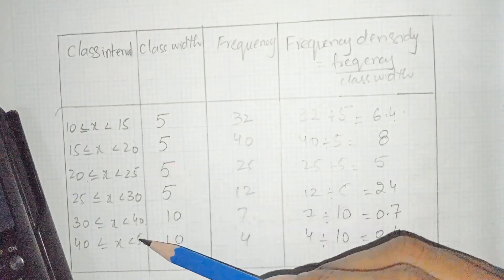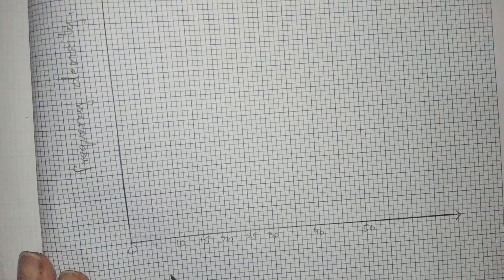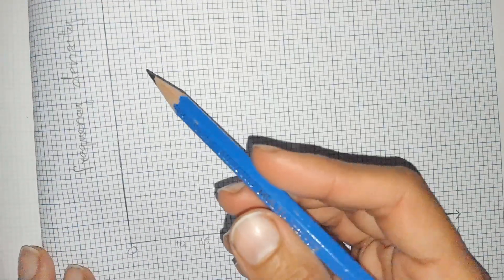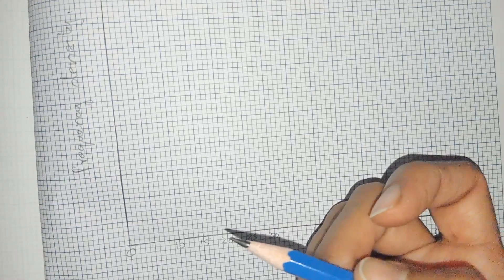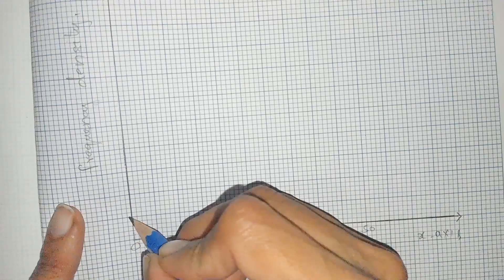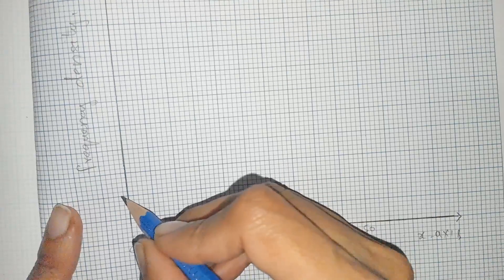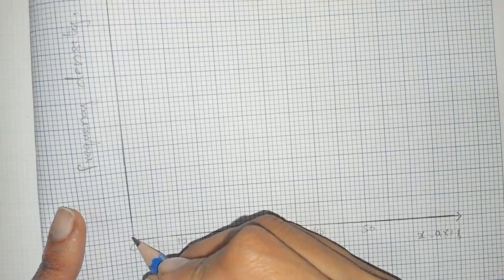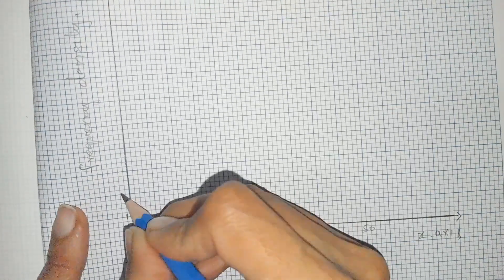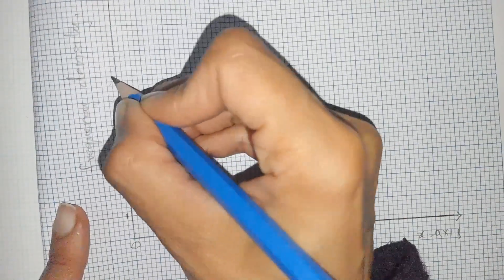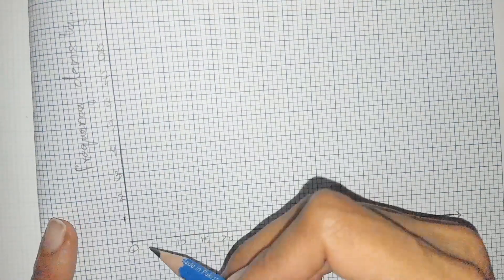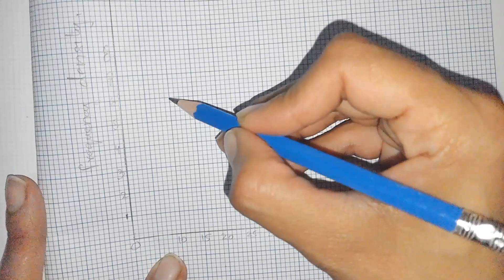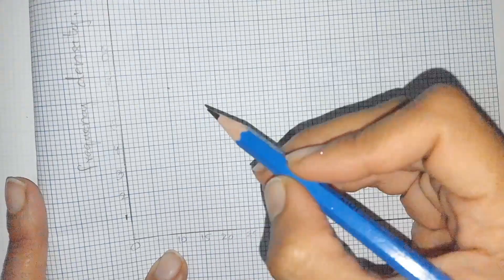Now we draw the histogram on graph paper. The class intervals are along the x-axis and the frequency densities along the y-axis. The smallest value is 0.4 and the highest is 8, so we scale accordingly — taking each block from 1 to 8. From 10 to 15 the frequency density is 6.4, so we go to 6 and then two small blocks to reach 6.4.